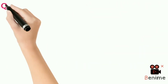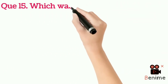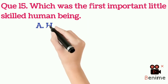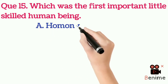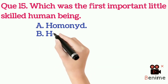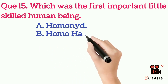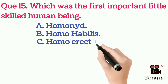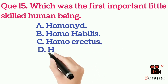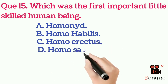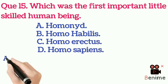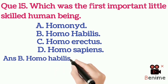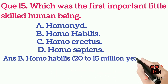Question 15: Which was the first important little-skilled human being? A. Homo nad. B. Homo habilis. C. Homo erectus. D. Homo sapiens. Answer B: Homo habilis, 20 to 15 million years ago.